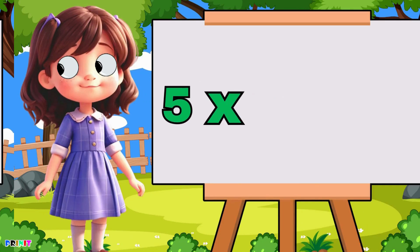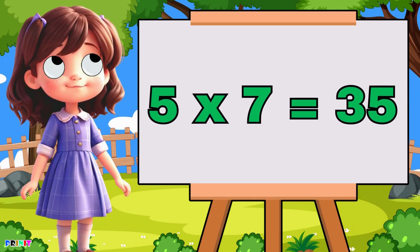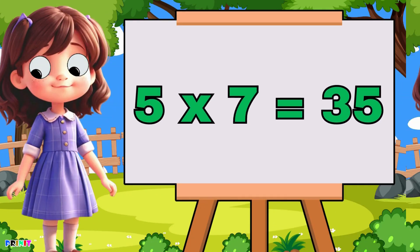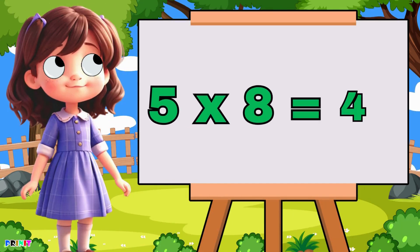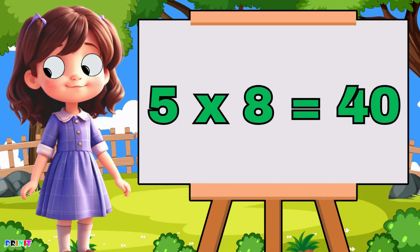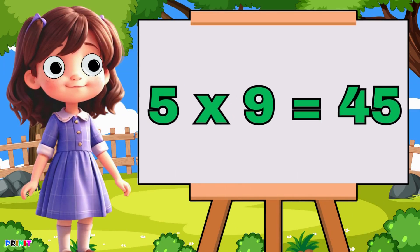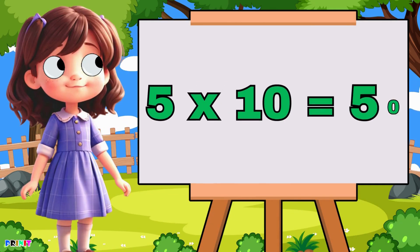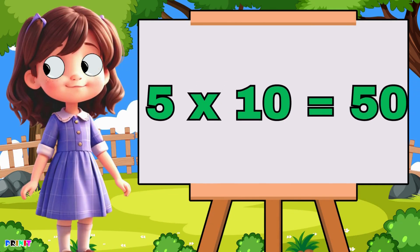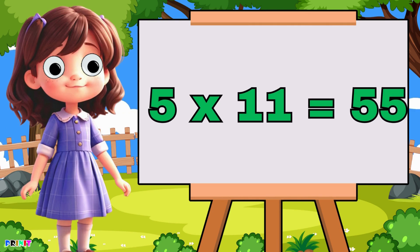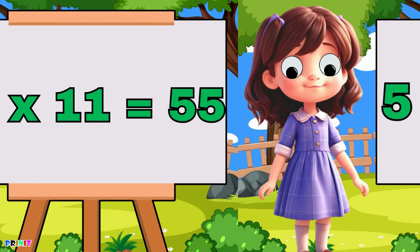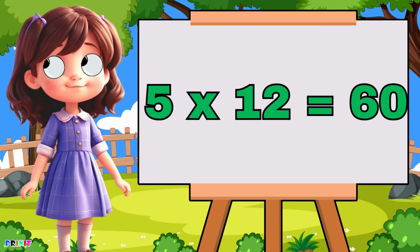Five seven's are thirty-five, five eight's are forty, five nine's are forty-five, five ten's are fifty, five eleven's are fifty-five, five twelve's are sixty.